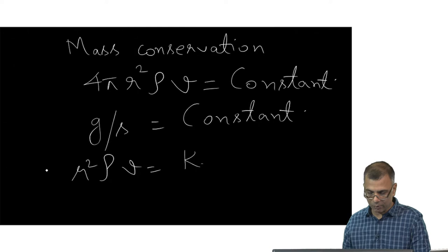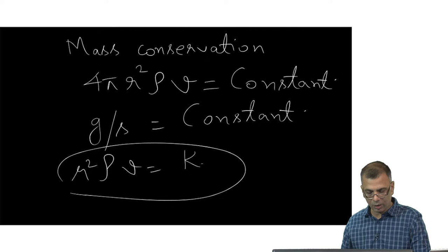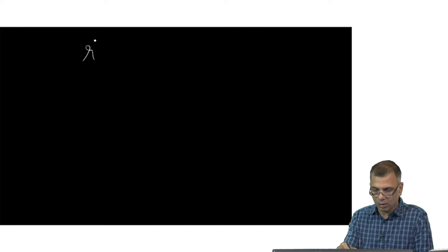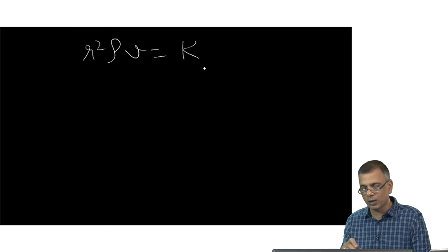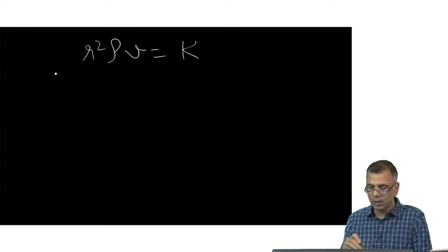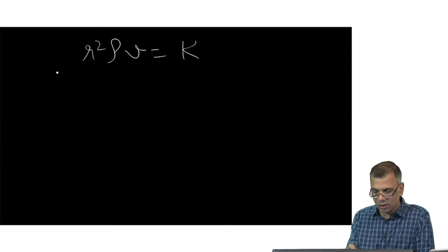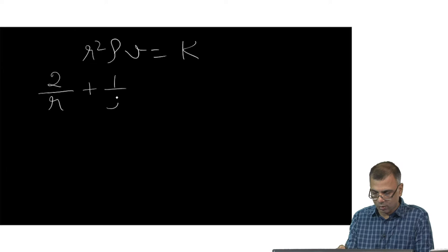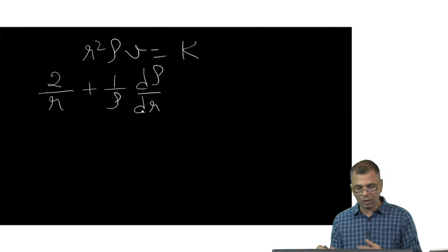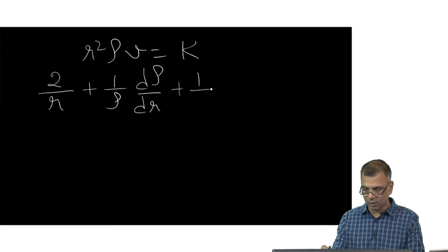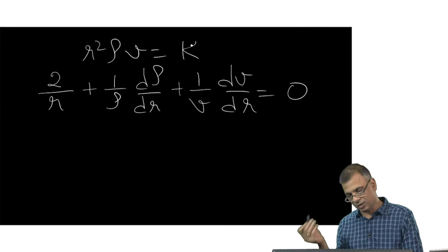I choose not to use that form of the equation. Instead I differentiate both sides with respect to r. Recognizing that ρ is a function of r, v is also a function of r, but k is not a function of r, when I differentiate both sides with respect to r, the mass conservation equation becomes — these are straight derivatives, not partial derivatives because of the assumption of spherical symmetry — equal to 0, since dk/dr = 0. This is equation 1.